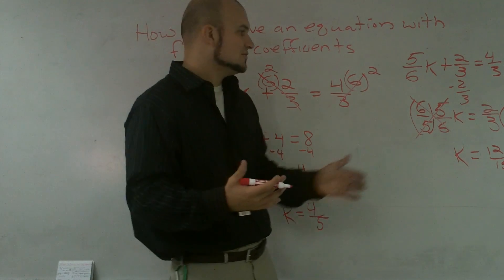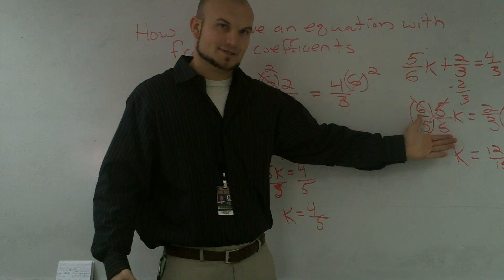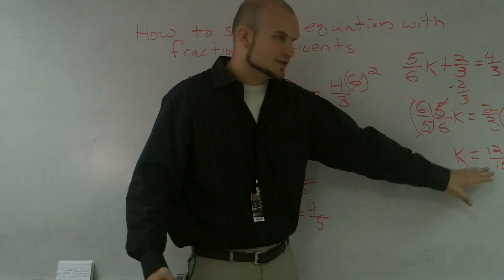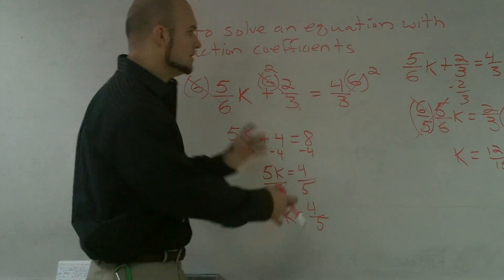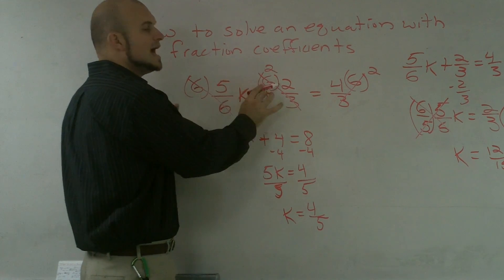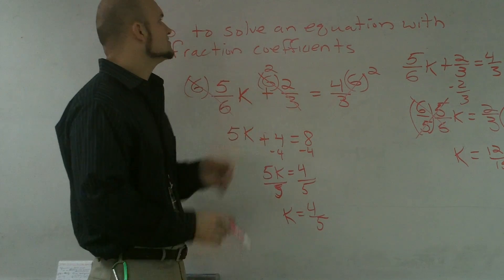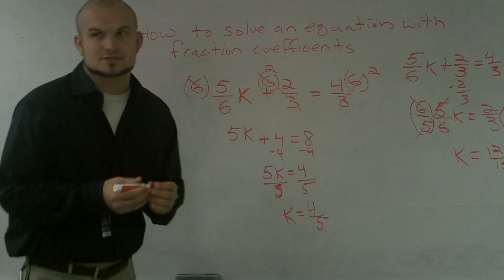So you guys have two different methods to solve for this. You can solve your traditional way with fractions. You all know how to solve for fractions by now. So this method does work. Another way to get rid of the fractions is multiply by your common denominator to every term and then go ahead and solve this as well. All right? So that's how you solve an equation with rational coefficients.